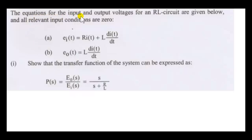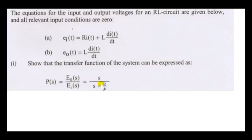The equations for the input and output voltages for an RL circuit are given below, and all relevant input conditions are zero. Show that the transfer function of the system can be expressed as S over S plus R over L.